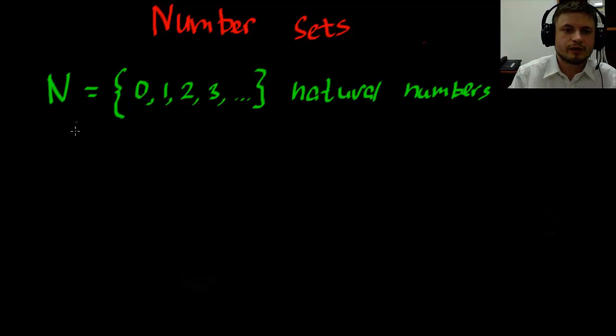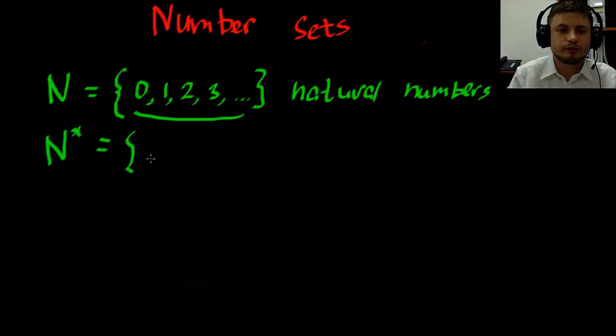Now IB book also provides another natural number with a little asterisk and these are called counting numbers. And this is really easy to remember. It's essentially everything that you have here except for 0. 0 is not included in this. So it's the same thing except for 0. And this one is quite easy to remember because natural has N as the first letter.